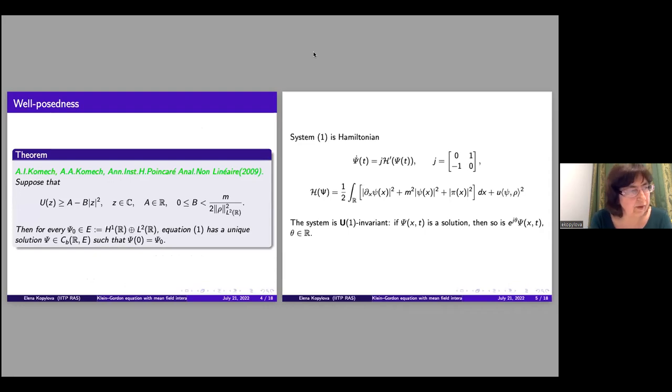The global well-posedness for this equation was established in the paper of Alexander Komech and Andrej Komech under additional assumption on the potential U. The system can be written formally as a Hamiltonian system with this Hamiltonian function. And moreover, the system is U1 invariant. If Psi is solution, then this function is also solution of our system.